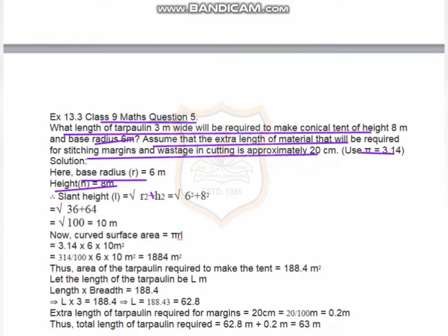Slant height l = √(r² + h²) = √(6² + 8²) = √(36 + 64) = √100 = 10 meters. Curved surface area equals π r l = 3.14 × 6 × 10. Removing the decimal point we divide by 100: 3.14/100 × 6 × 10, which equals 188.4 meters square.